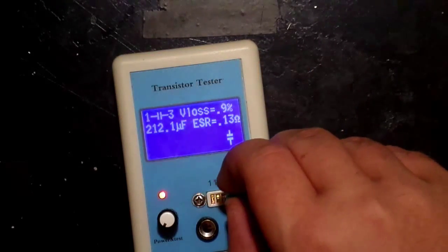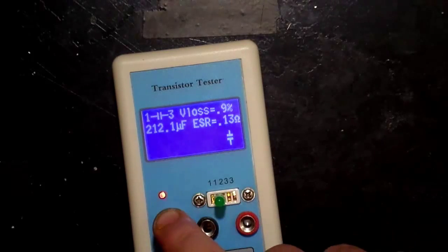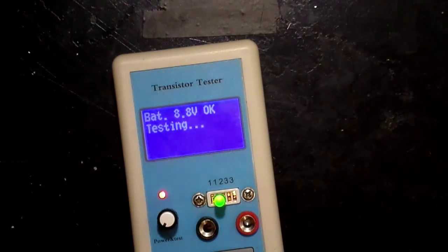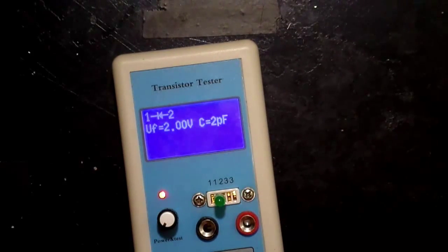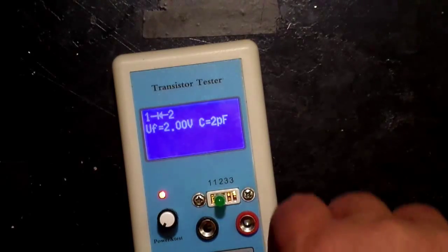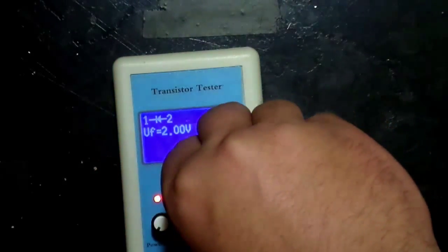We're now going to test this LED. You can also test other devices like a thyristor and a MOSFET. Please see the manual in the link below. This LED gave me its operational voltage, capacitance and polarity.